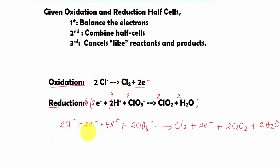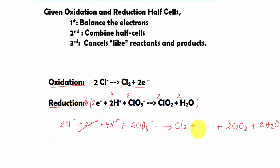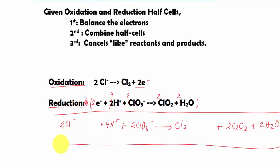For step 3 we cancel like reactants and products — the 2 electrons on the reactant side cancel with the 2 electrons on the product side. We check if anything else appears on both sides: Cl⁻, H⁺, ClO₃⁻ — none of those match. So our final answer is the combined equation without the electron terms.